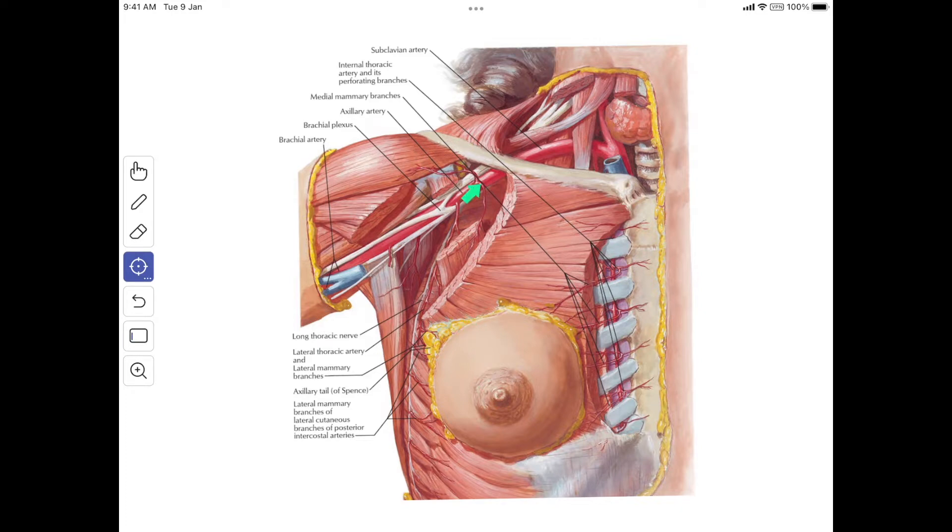Next is the superior thoracic artery, which is a branch from the first part of the axillary artery. It also supplies the upper part of the mammary gland.